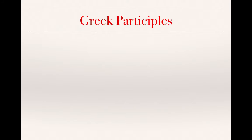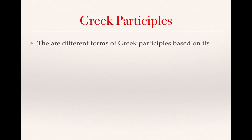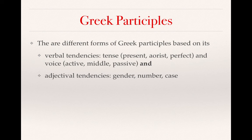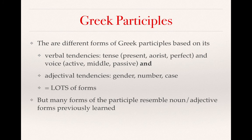Greek participles have different forms based on verbal tendencies. They will have tense — present, aorist, or perfect — and voice — active, middle, or passive — and can appear in all combinations of these. They also demonstrate adjectival tendencies, having gender, number, and case. This means there are a lot of forms, but fortunately many resemble other noun or adjective forms we've previously learned. We'll be looking for distinctive endings and distinctive infixes — little parts of words inserted into a verbal form to indicate a participle.